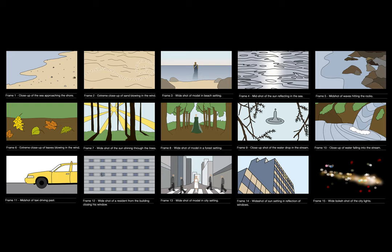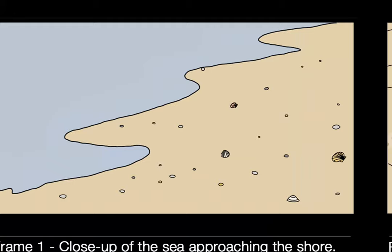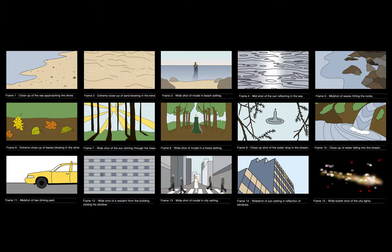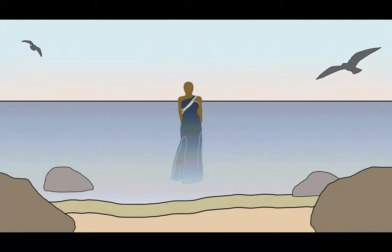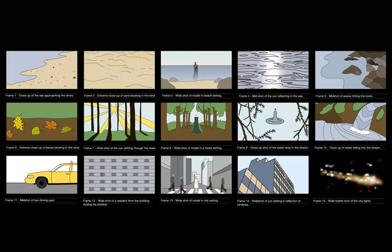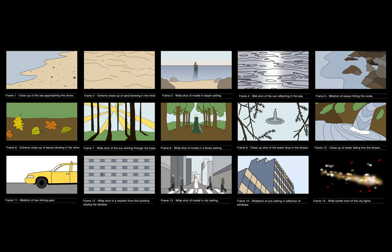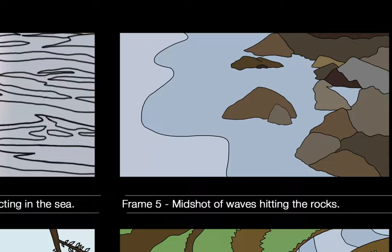The visuals will range from extreme close-ups capturing details to wide shots capturing the whole location. Frame one, the opening shot, will be a close-up of the sea approaching the shore. Frame two will be an extreme close-up of the sand blowing in the wind across the frame. Frame three will be a wide shot of the model standing in the centre of a beach setting; as the waves come to the shore, the dress and her feet will be covered by the water. Frame four will be a mid shot of the sun reflecting in the sea — as the light hits the sea there will be movement. Frame five will be a mid shot of the waves hitting the rocks, and will transition into frame six using the whip transition technique.